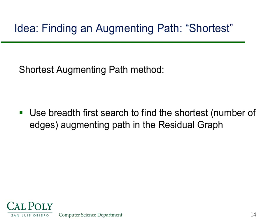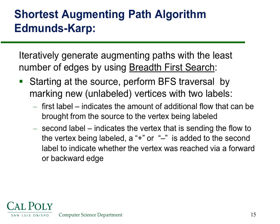The shortest augmenting path method uses breadth-first search to find the shortest augmenting path in terms of number of edges — this has nothing to do with the weights on the edges. You start at the source in the residual graph and perform a BFS traversal, marking each new unlabeled vertex with two labels: the first label is the amount of additional flow that can be brought from the source to that vertex, and the second label indicates the vertex sending the flow along with a plus if it's a forward edge or a minus if it's a backward edge.